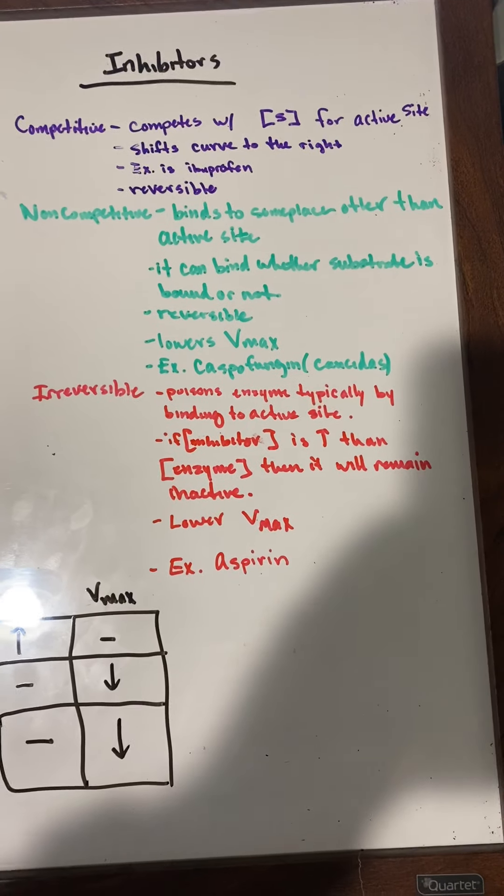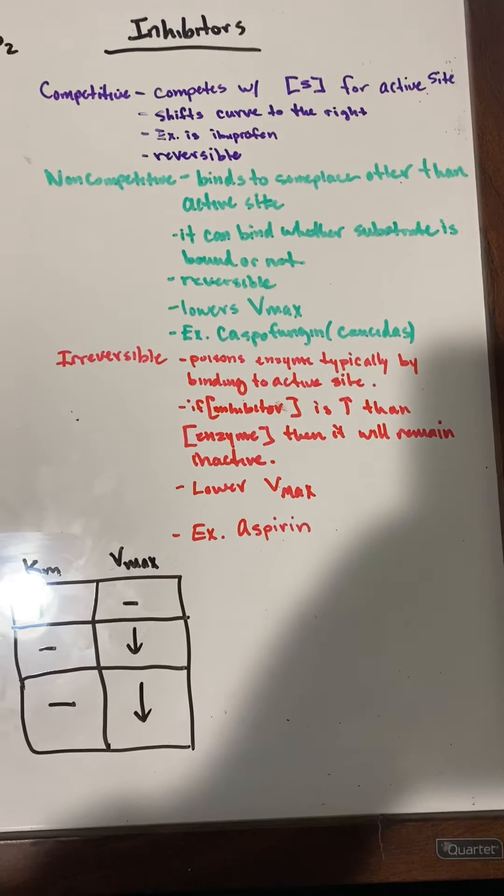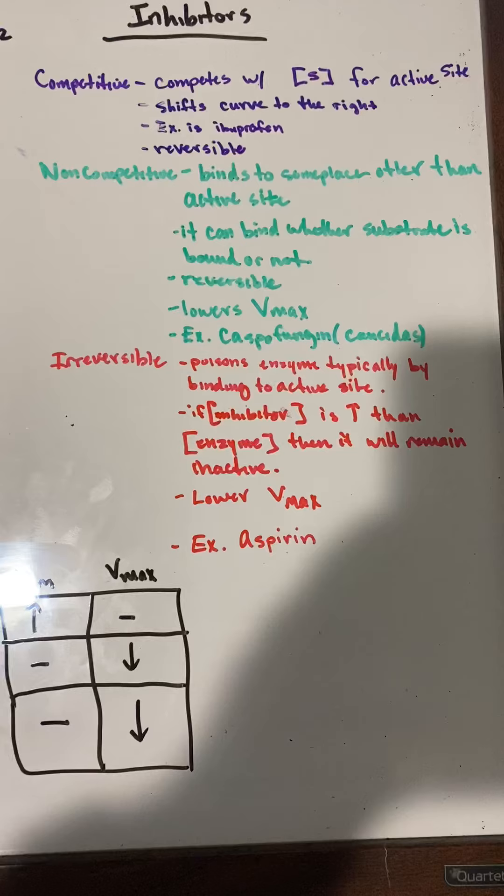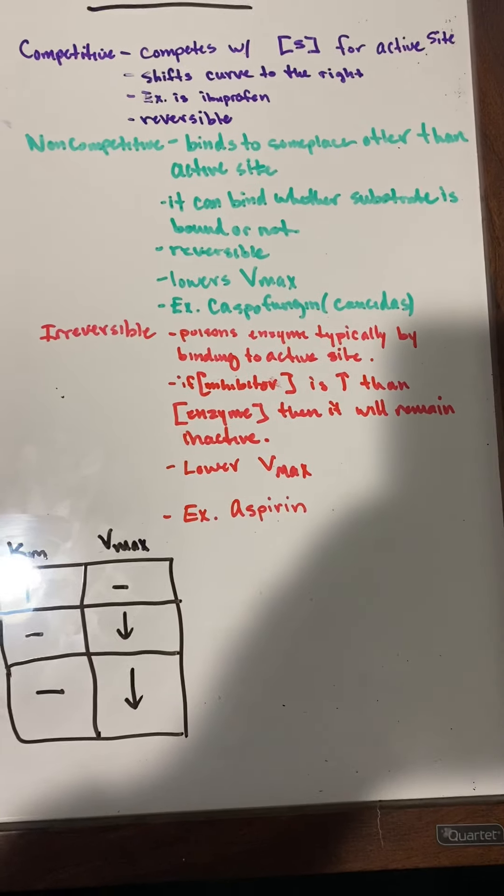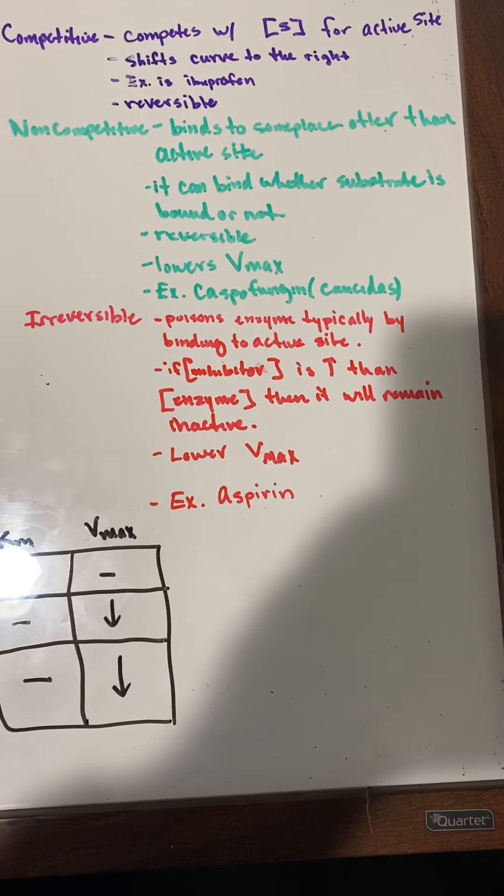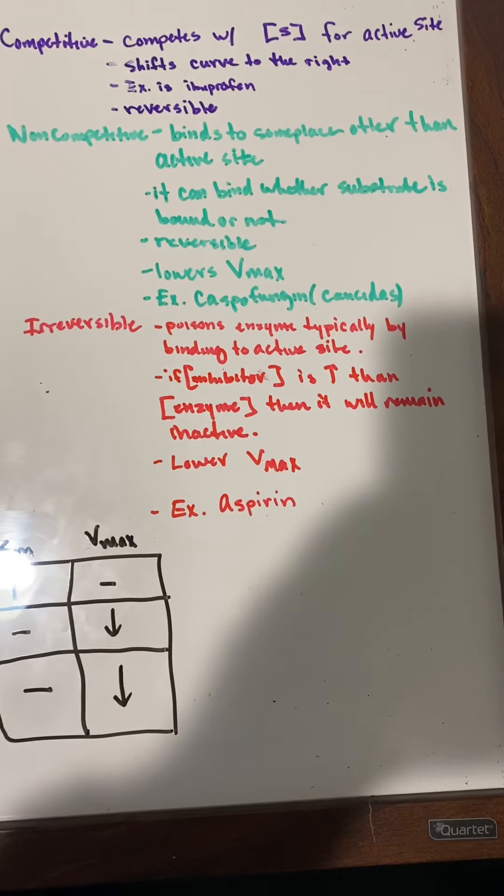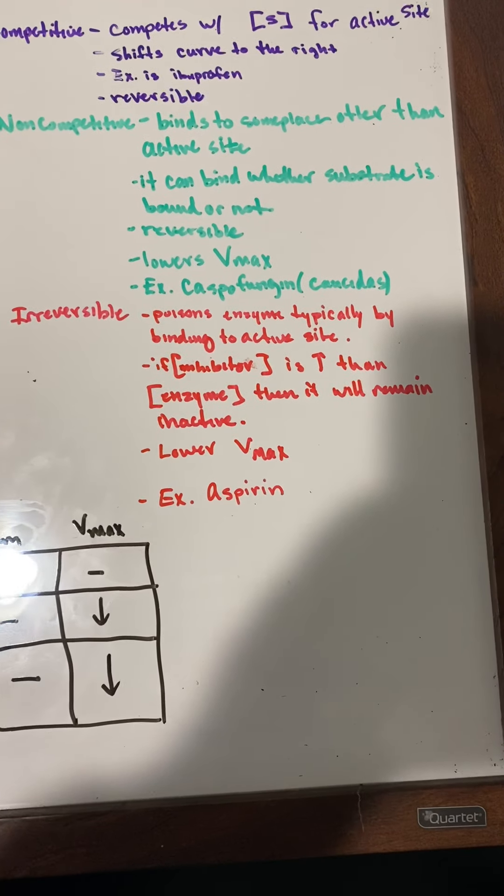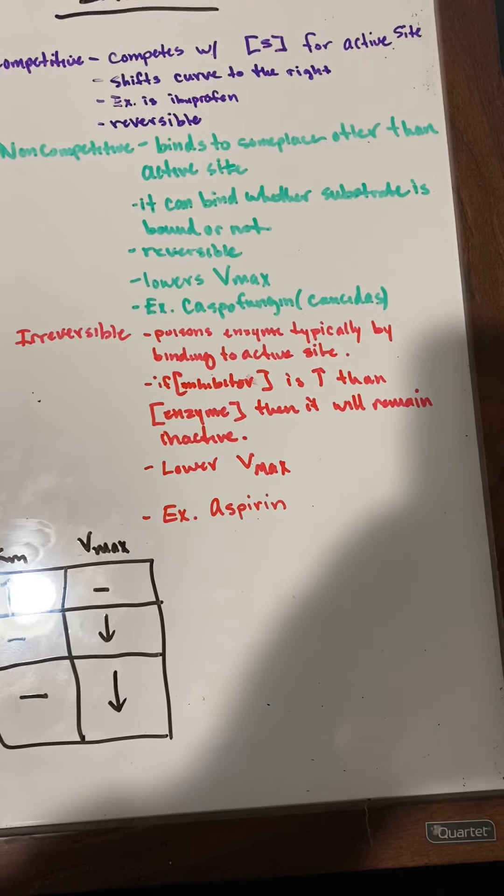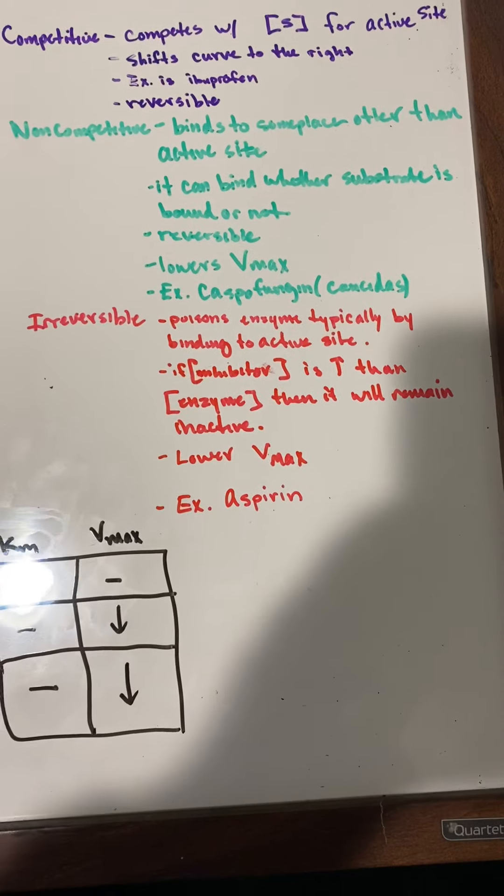So non-competitive is reversible—the first two are reversible. But here's the irreversible inhibitor, and obviously by the name you can tell it's irreversible. It pretty much poisons the enzyme at the active site. If the inhibitor concentration is greater than the enzyme concentration, then it will remain inactive—it just shuts it off. This one lowers Vmax, and our example was aspirin.